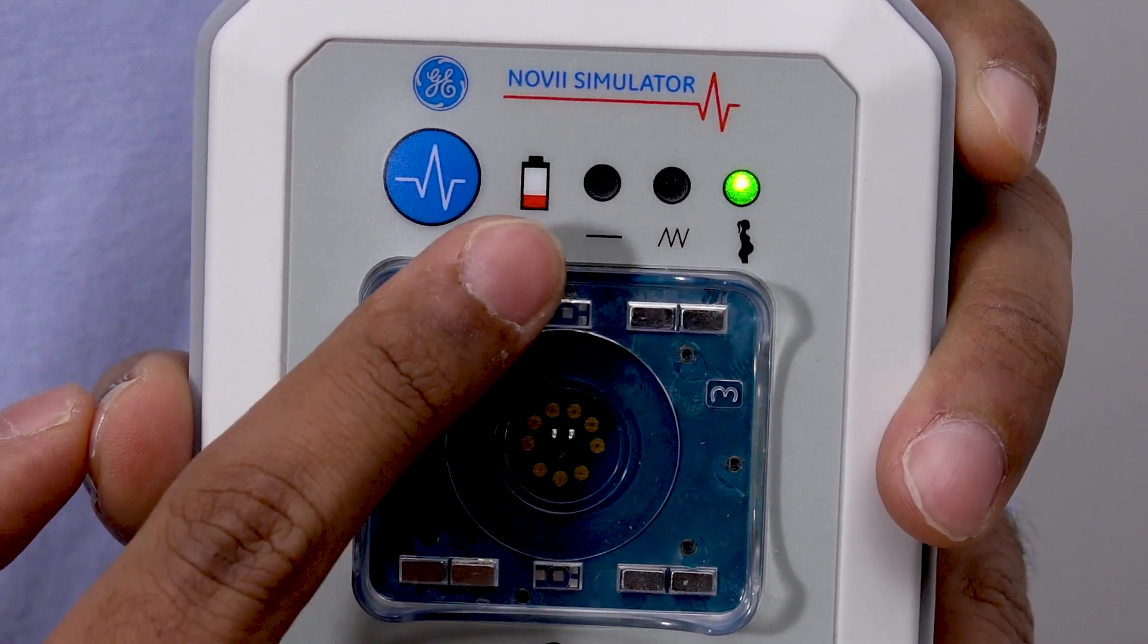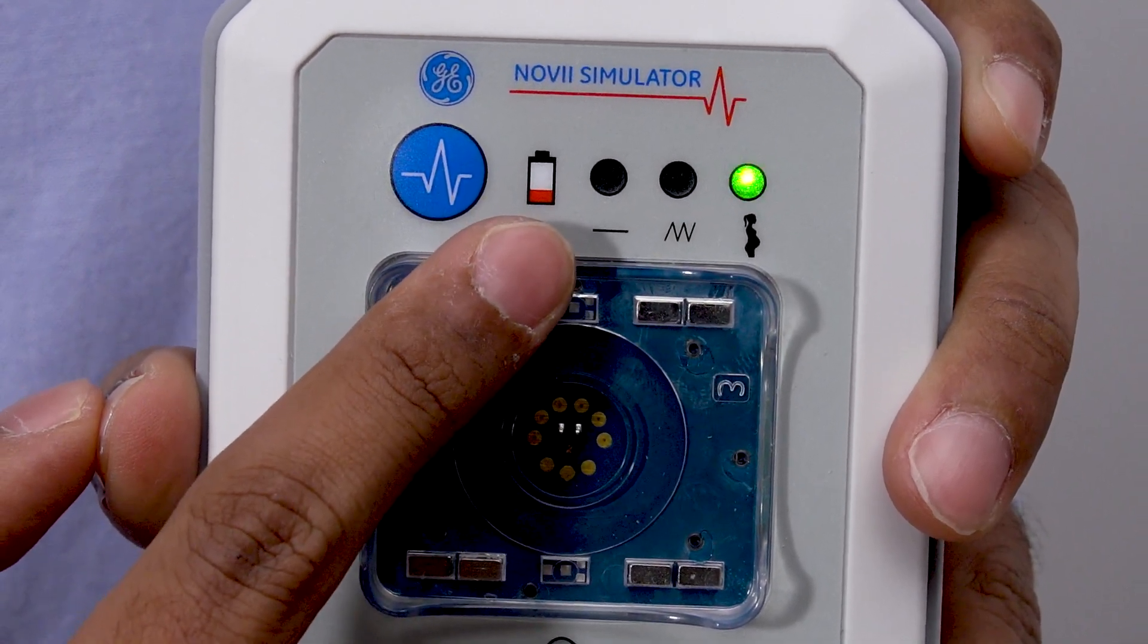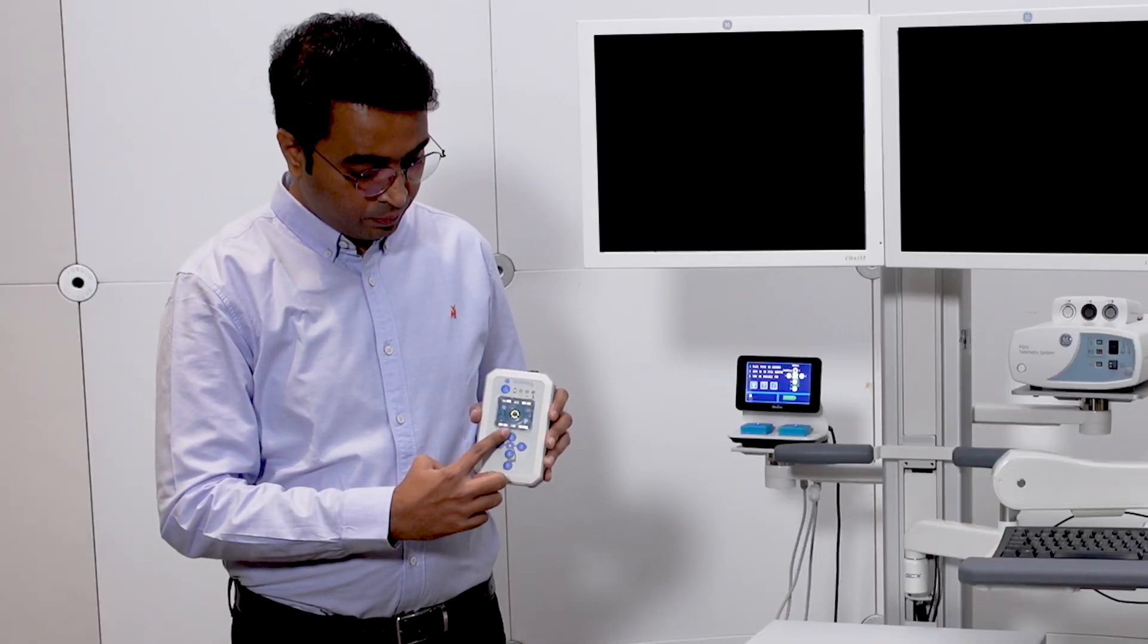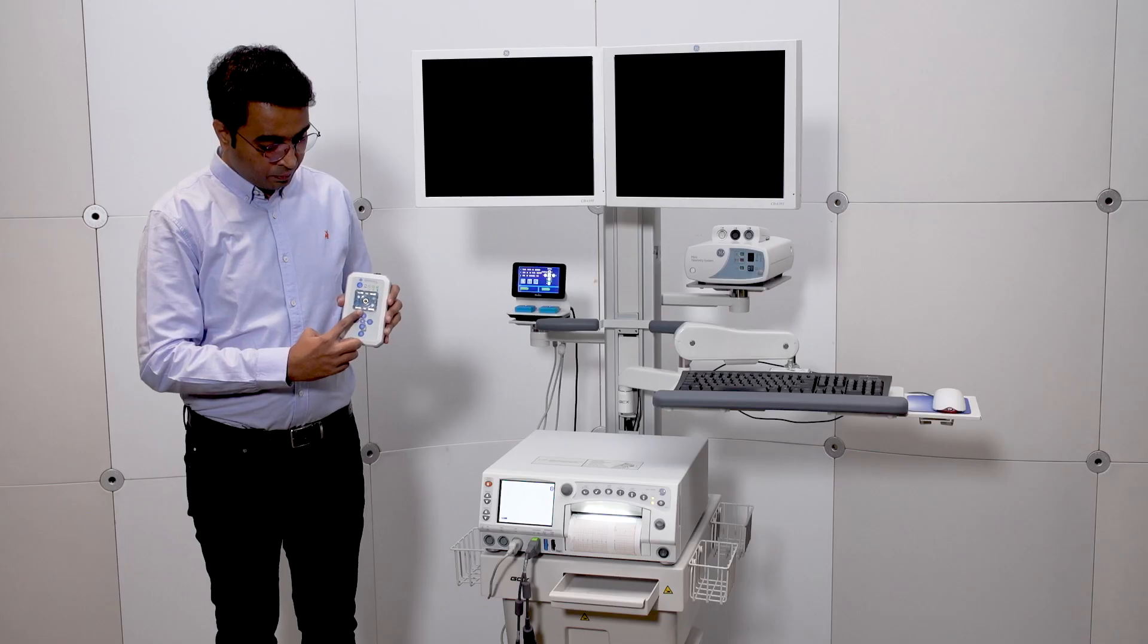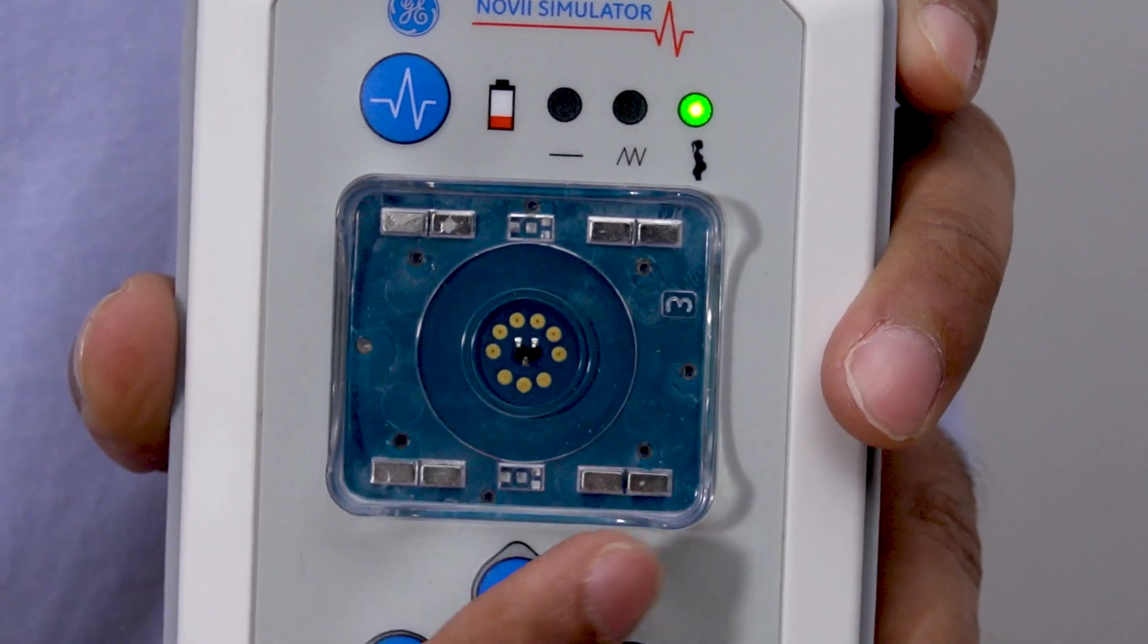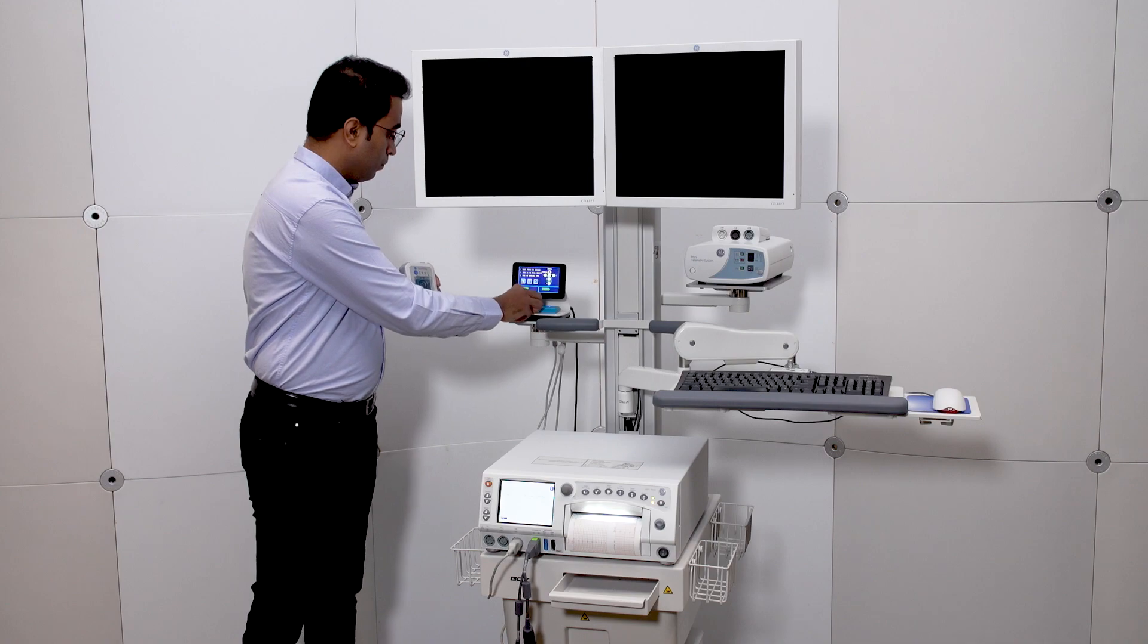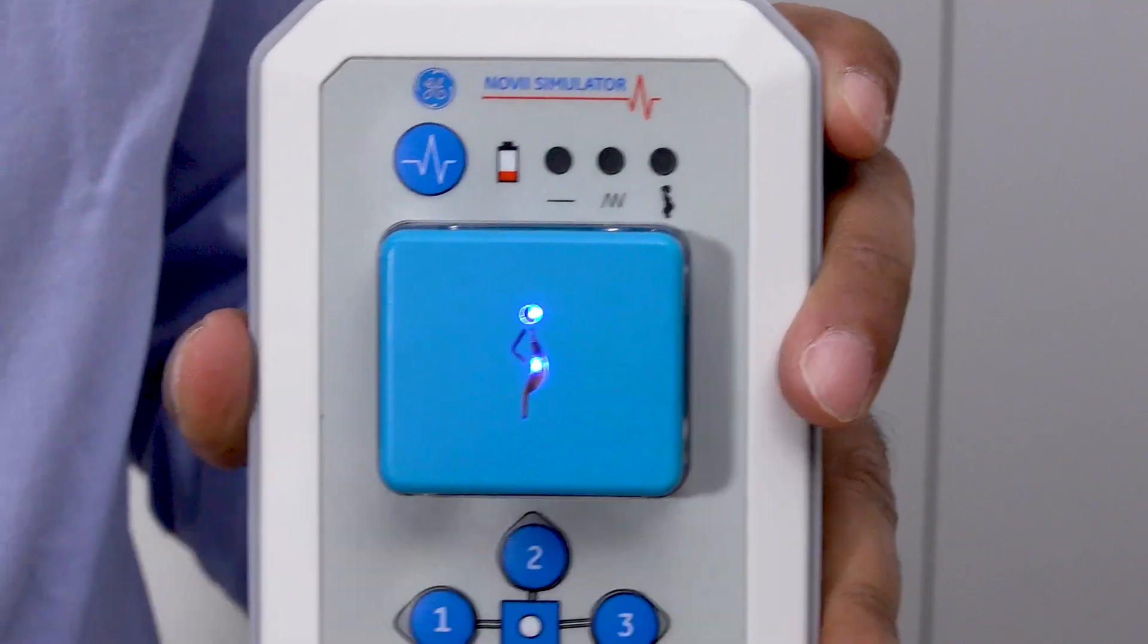Next to the mode selection button is a low battery indicator, which will flash to indicate that the battery is critically low. This is the Novi simulator pod clip. It magnetically holds the Novi pod in the correct position. Do not use it with any other pod. The pod fits into the clip, like this.